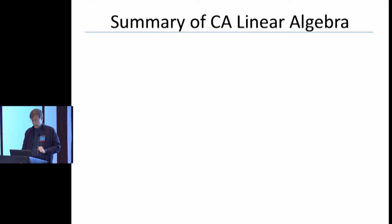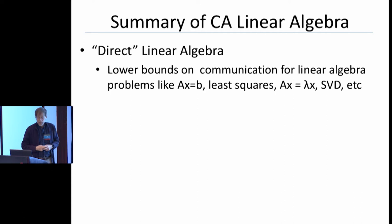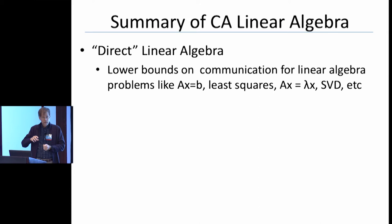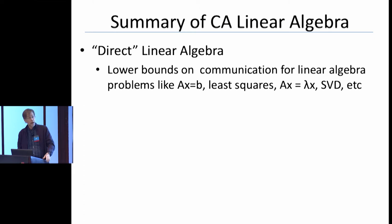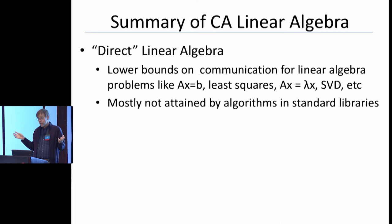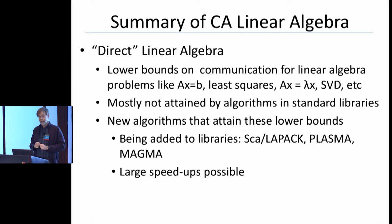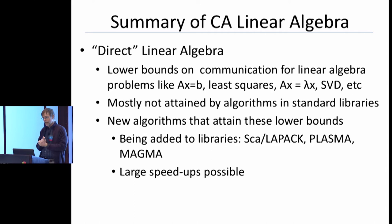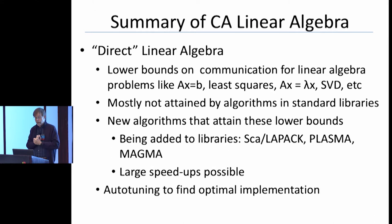Here's the state of the art of communication-avoiding linear algebra. For direct linear algebra, I'll show lower bounds on communication for anything you think of as linear algebra — matrix multiply, solving linear equations, least squares, eigenvalue problems, SVD — both for memory traffic (DRAM to cache) and between processors over a network. Once you have the lower bounds, you compare them to standard libraries like LAPACK and ScaLAPACK. They were asymptotically doing more communication. We've been working hard to get new software into these libraries. The theory tells you roughly what the algorithm looks like, though some auto-tuning is still required to get all constants right.